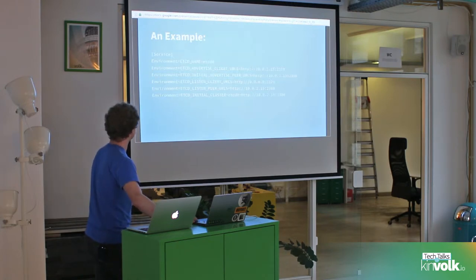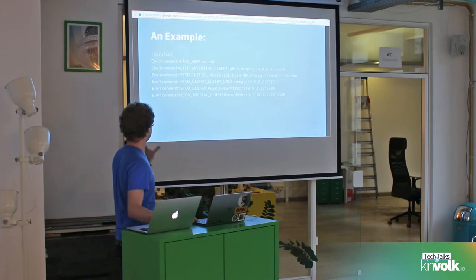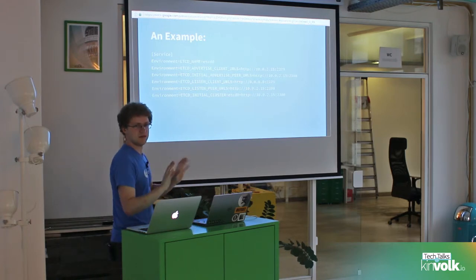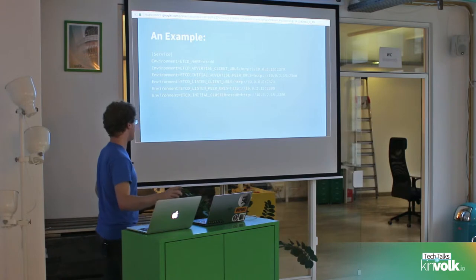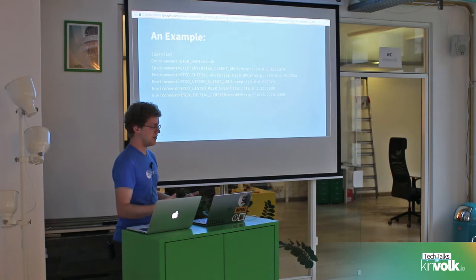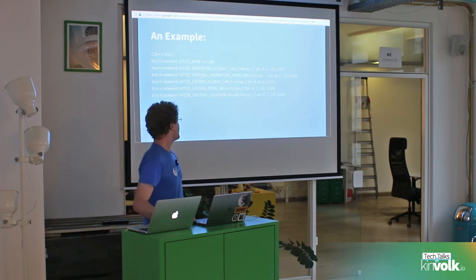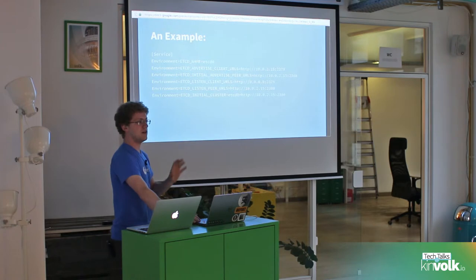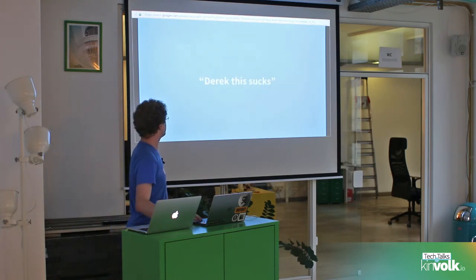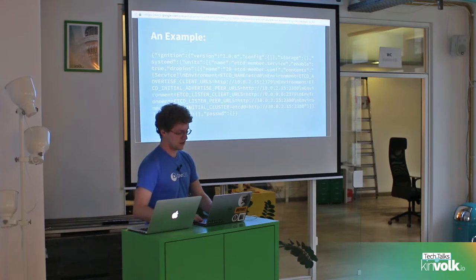Here's an example. This is a systemd drop-in file specifying the same arguments for etcd that we saw last time, except this is set up for etcd3. This should configure the same etcd instance we just had running. However, because this is going into a JSON file, we need to JSON-string-escape it and put it into the actual config. And this is what that looks like — yeah, it's a mess.